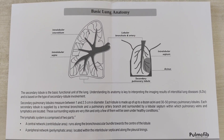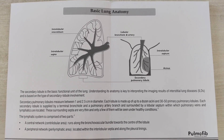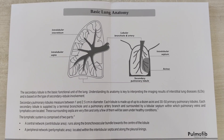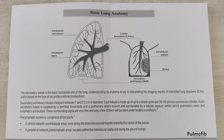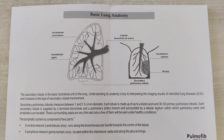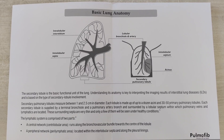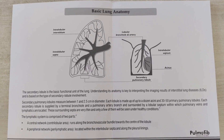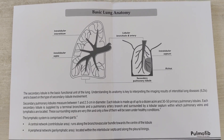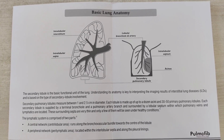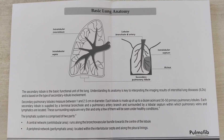Each secondary lobule is supplied by a terminal bronchiole and a pulmonary artery branch, and is surrounded by a lobular septum within which pulmonary veins and lymphatics are located. These surrounding septa are very thin, and only a few of them will be seen under healthy conditions.